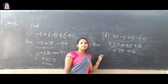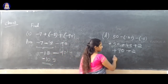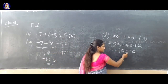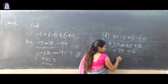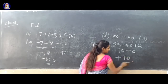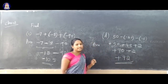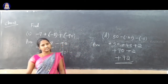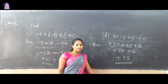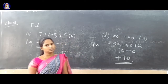So 90 plus 2 — both also having same sign, plus is plus. So 90 plus 2 is 92. Greater number is 90, that sign is plus. The answer is plus 92.